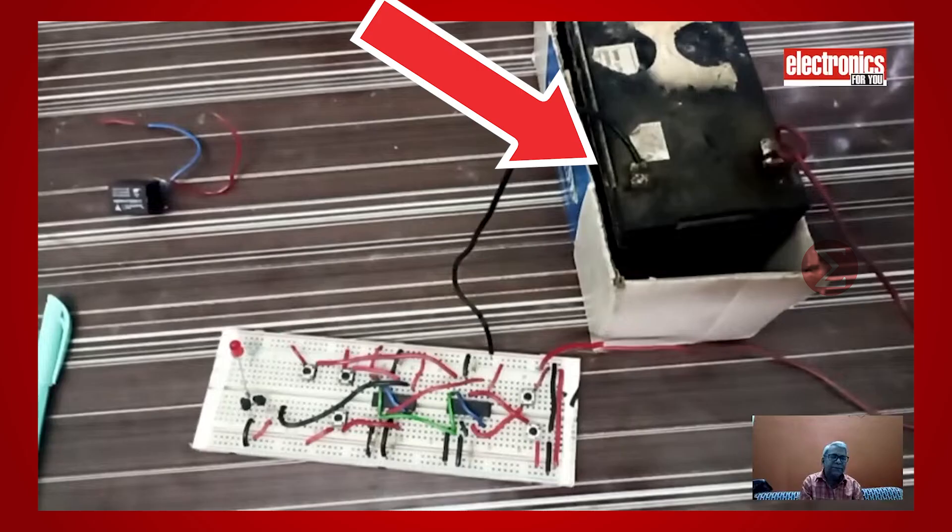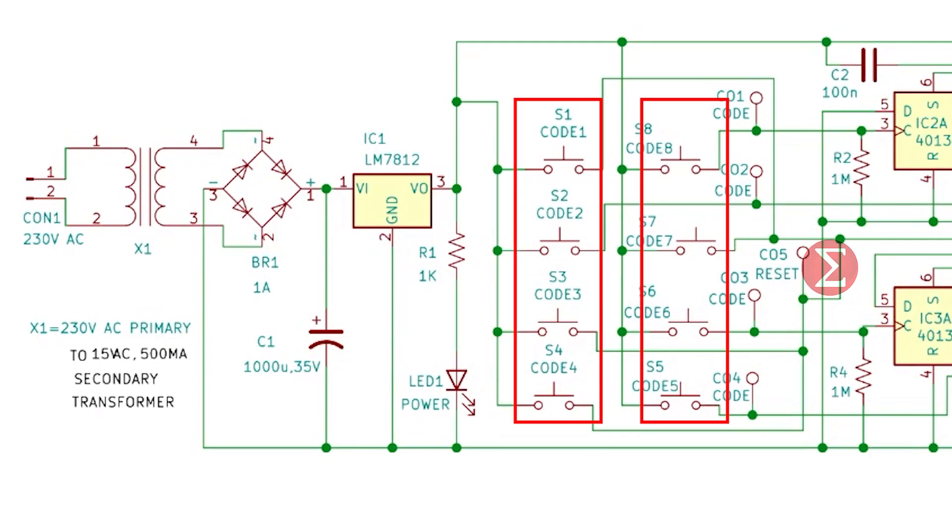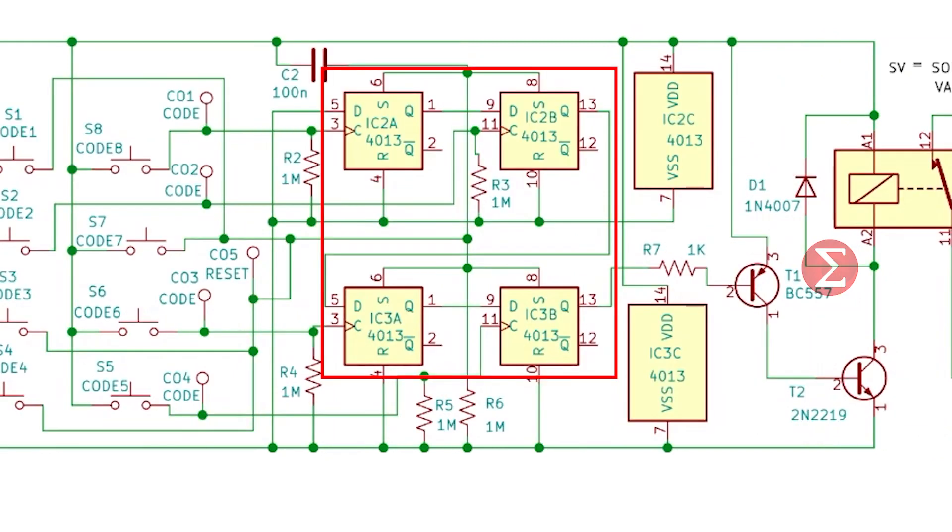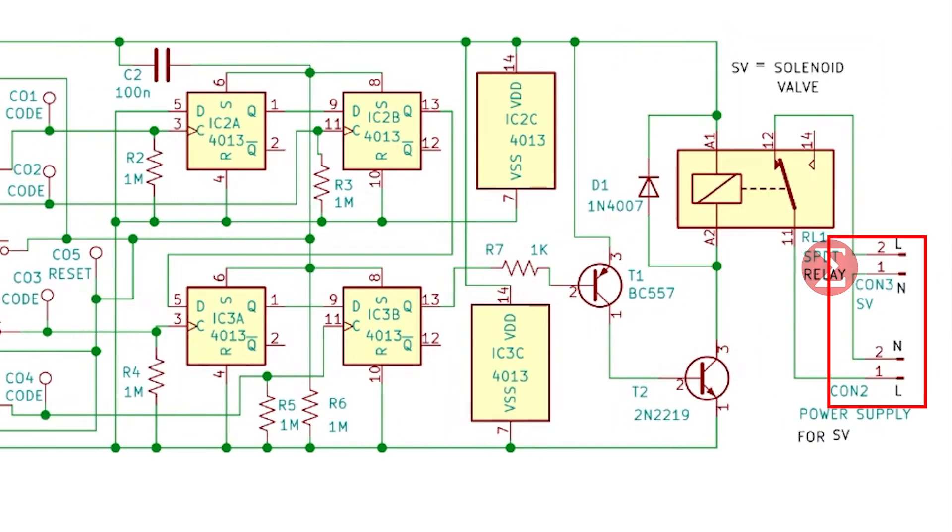We are using a battery here in place of these components to power up our circuit with 12V. Apart from these, you can see eight push buttons that we will use to set a unique code. Main IC here is D flip-flop IC and this is a Darlington pair transistor to drive the relay. The relay output is set in the gate the way you want to set.